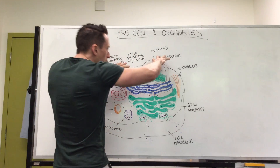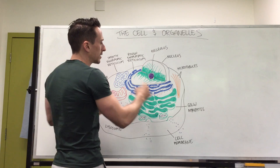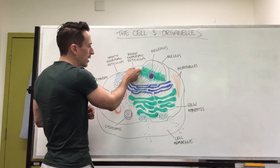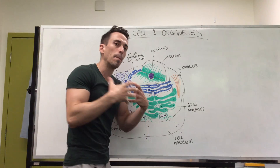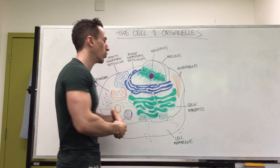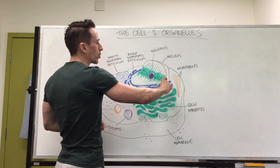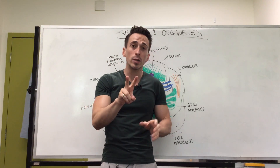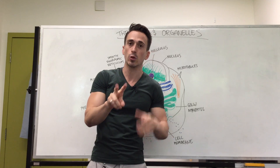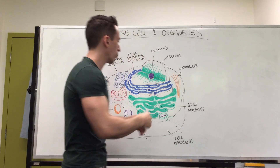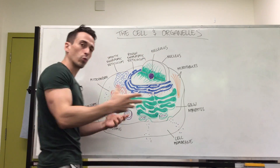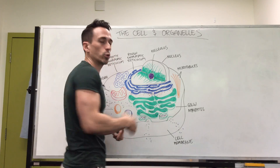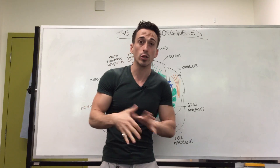As we move outside of the nucleus, you can see that there is this structure here which looks like it's continuous with the membrane of the nucleus, which we call the rough endoplasmic reticulum. There are actually two endoplasmic reticulums — a rough and a smooth. The rough is called rough because you can see it's studded by all these red dots which we call ribosomes.